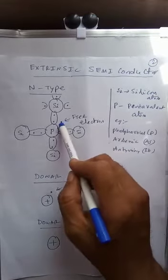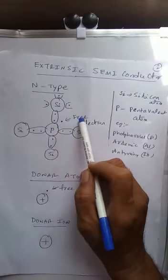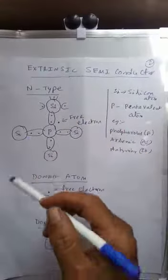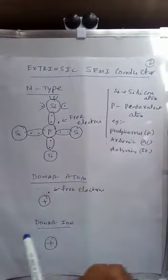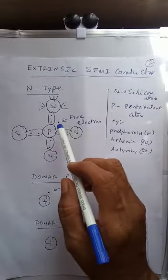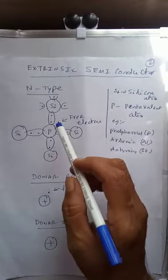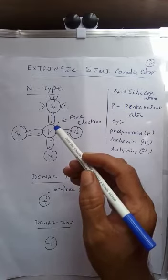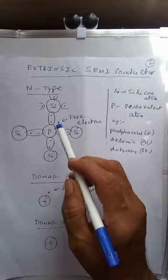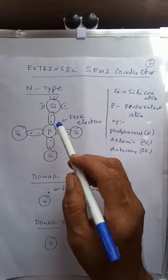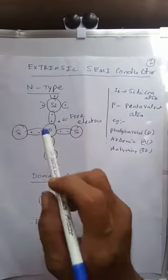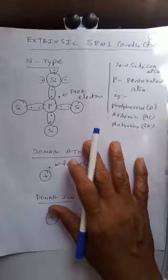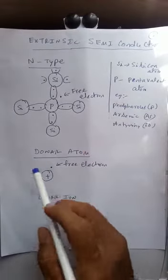One electron remains as a free electron. This process is called doping. After doping, the material has more free electrons than holes. Since the charge of electrons is negative, this is what is called an n-type semiconductor material.